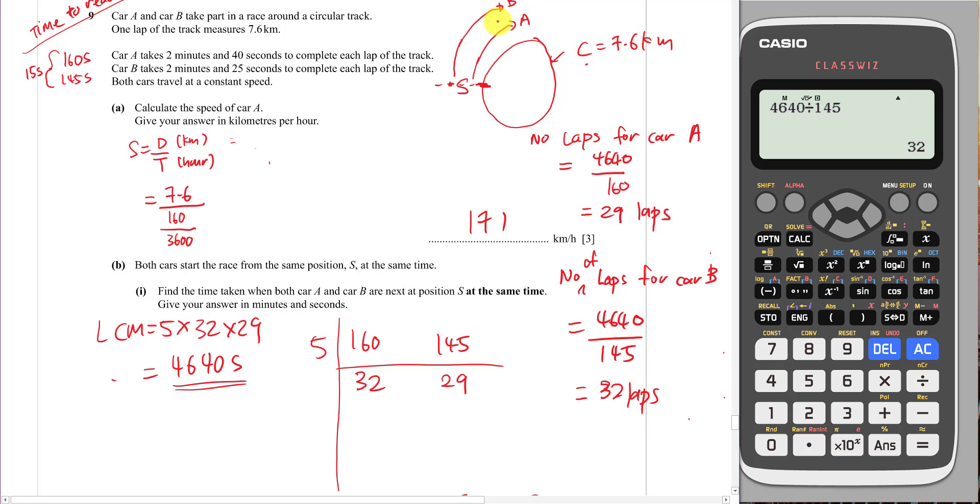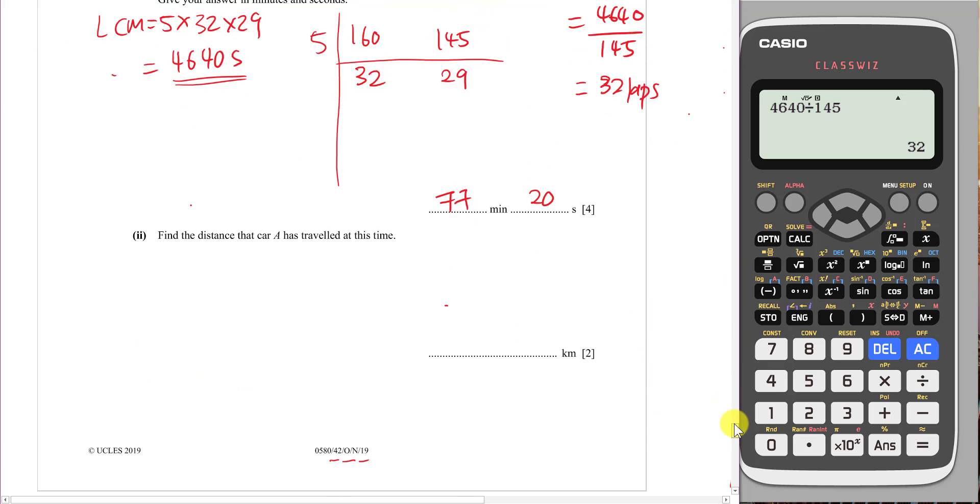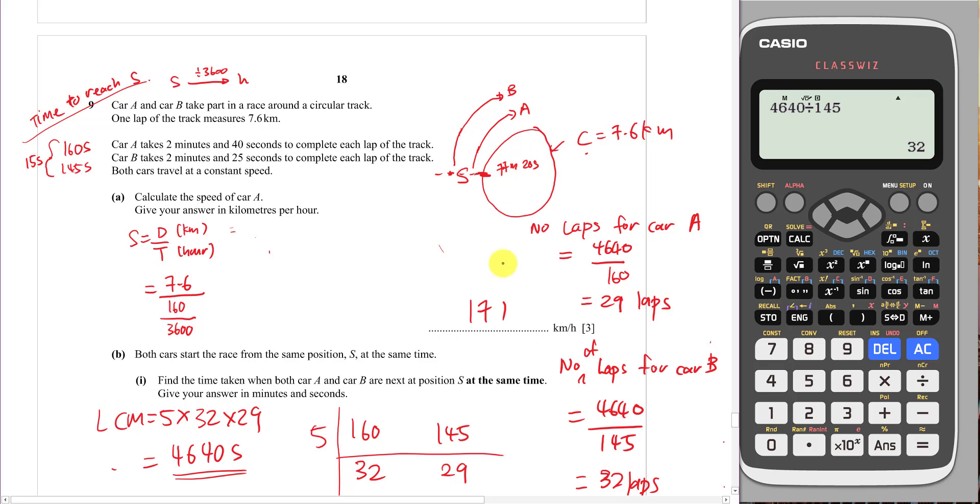Just imagine both A and B are going to move at the same time. They're going to keep on rotating. For car A, when they rotate 29 laps, they will stop at S after 77 minutes and 20 seconds. After 29 rounds, car A is going to stop at S. But car B is faster, so car B is going to rotate 32 rounds. Keep on rotating until 32 rounds, then only car B will stop at S, also after 77 minutes 20 seconds. This is the meaning of same time.